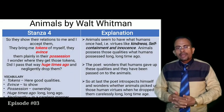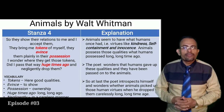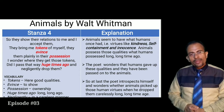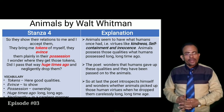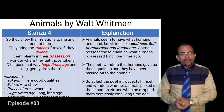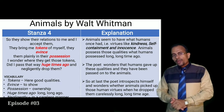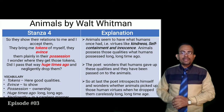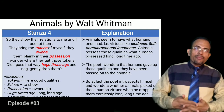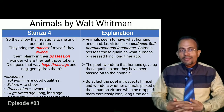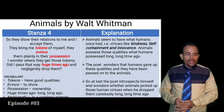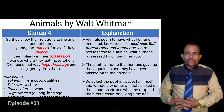Stanza four: 'So they show their relations to me and I accept them, they bring me tokens of myself, they evince them plainly in their possession. I wonder where they get those tokens — did I pass that way huge times ago and negligently drop them?' Here 'tokens' refers to good qualities or evidence displayed. 'Huge times ago' refers to long, long time ago. Animals seem to have the virtues that humans once had — kindness, self-containment, and innocence — but not at the present time.